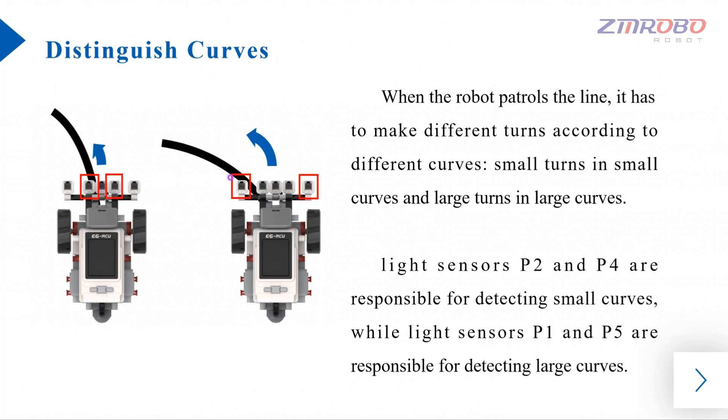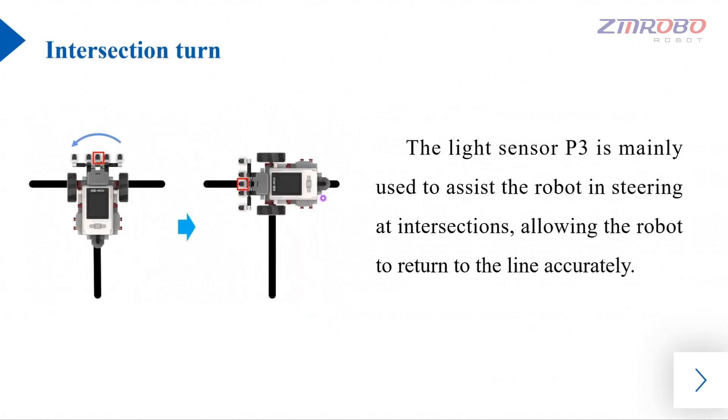Photoelectric sensors P2 and P4 are used to detect small curves and photoelectric sensors P1 and P5 are used to detect large curves, and photoelectric sensor P3 is needed to assist the robot in turning at junctions so that the robot can return to the line accurately.